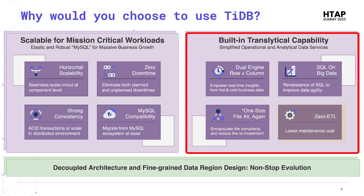And finally, zero ETL. This lowers maintenance costs because you don't have to have multiple systems to do multiple workloads — no separate system for transaction processing and another for historical queries. Normally there would be an ETL layer requiring a developer to write code to move data between systems. You don't have to do that here. Getting back to our dual storage engines, replication happens automatically — you don't have to do anything.